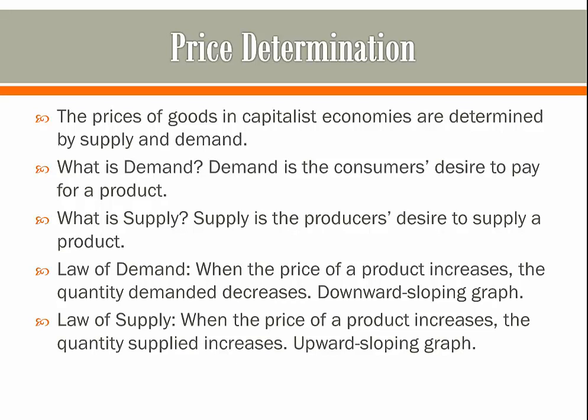There are two laws that are absolutely crucial to understand for economics. The law of demand states that when the price of a good increases, the quantity demanded decreases. If an apple were to cost $100, I wouldn't want to buy a lot. But if it were $0.10, I would buy a lot. This causes the demand graph to be downward sloping, because the higher the price, the less people buy.